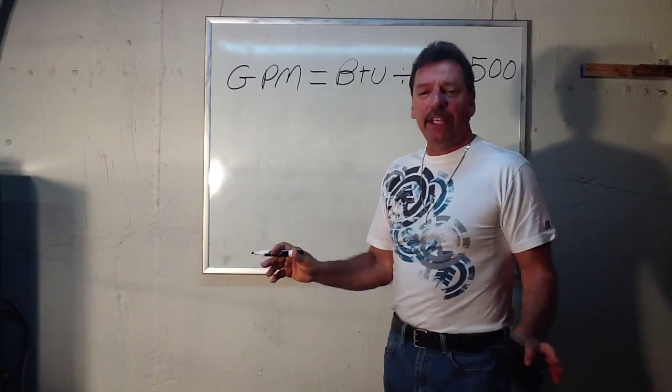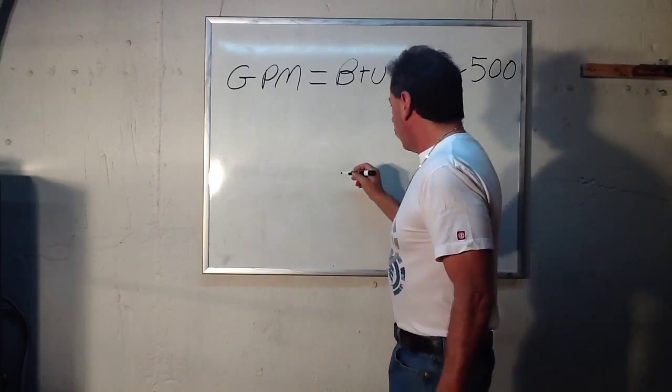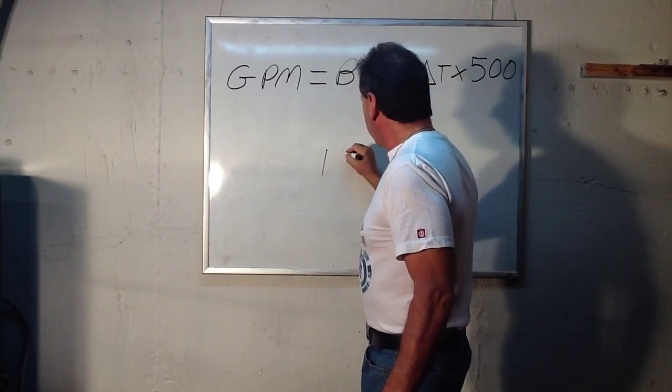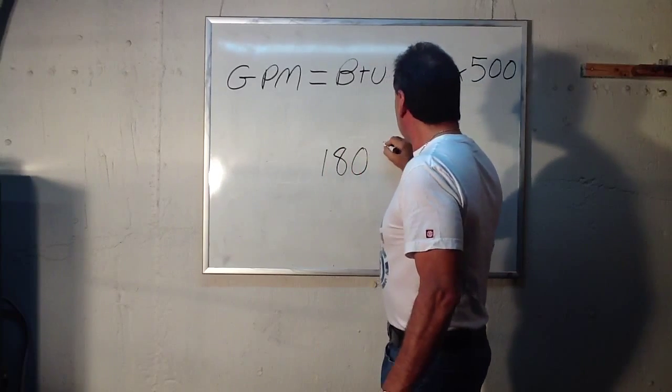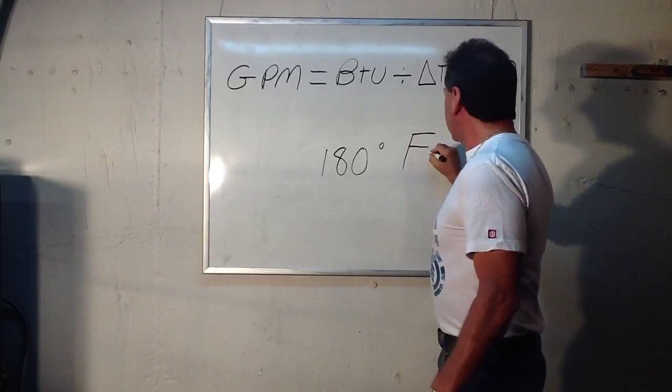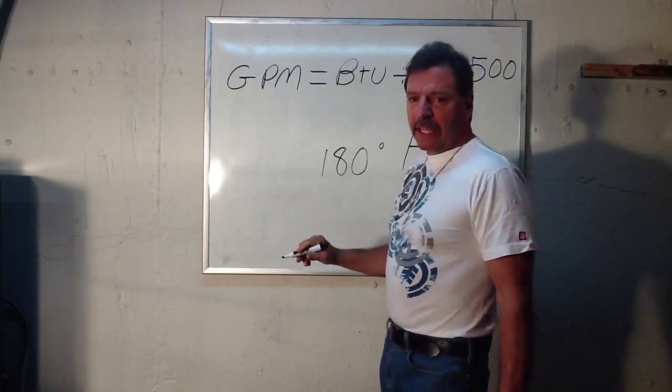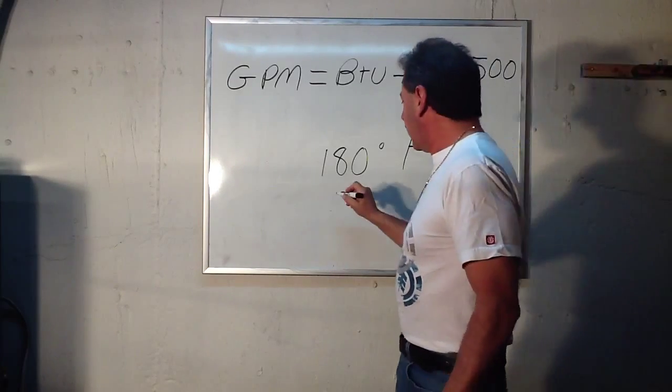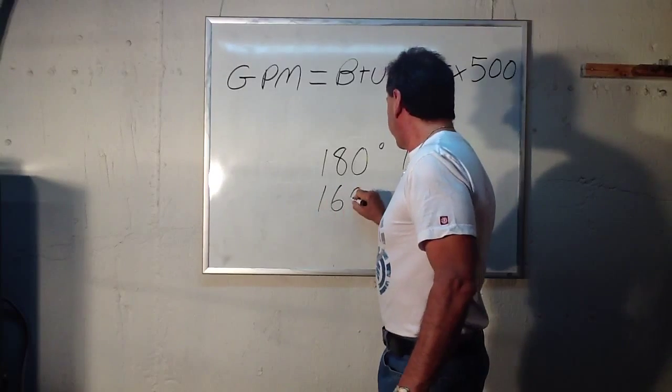When we're talking base water radiators, the water goes out of the boiler at 180 degrees Fahrenheit, and returns back to the boiler a little cooler at 160 degrees Fahrenheit.